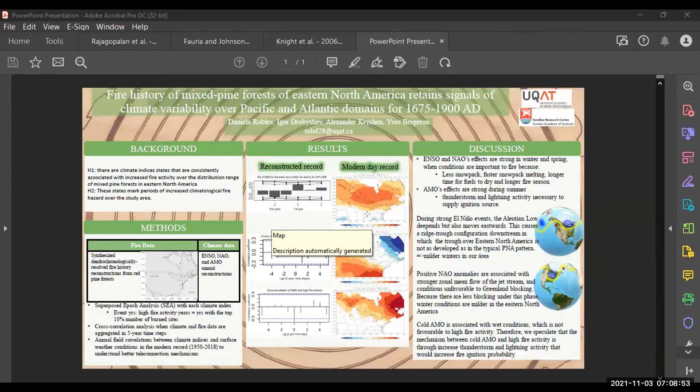Let's go through the methods. So for the fire data, I synthesized dendrochronologically derived fire history reconstructions completed in red pine forests. And then I built a network of sites in this area. So my network of sites roughly corresponds to the distribution range of red pine. Red pine is a very good recorder of fire in this area because it has a thick bark that allows it to survive low to moderate severity fires. So it records the fire event.